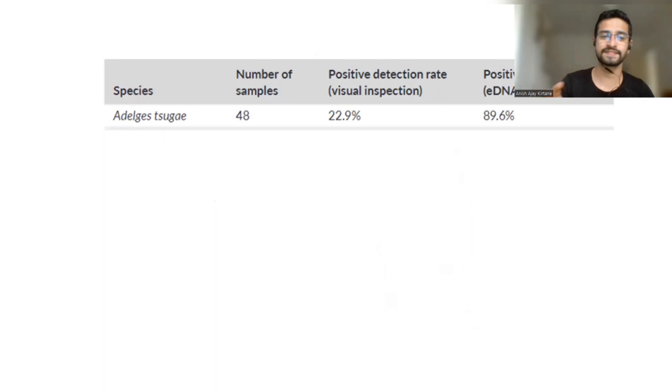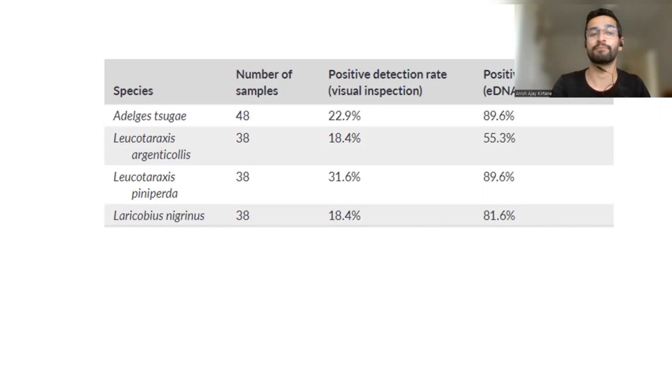And this is where you can see a really dramatic increase in the positive detection rate. In this case, we're looking at hemlock woolly adelgid. We see the positive detection rate of visual inspection is around 23%, but that increases to almost 90% using eDNA methods. This shows that there were a lot of samples that had HWA infestation, most likely, but we were not able to detect it, and we're missing a lot of samples. And we see a very similar pattern in our predators, where we see a lot of detection increase using eDNA methods.